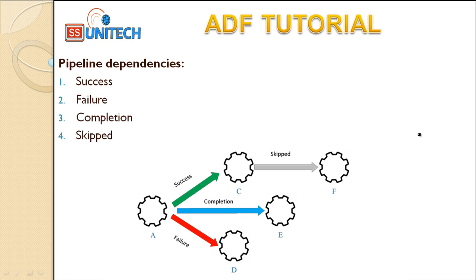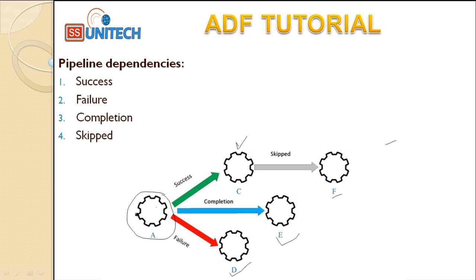As we can see in this diagram, if task A is executed successfully, then we want to execute task C. If task C is not executed, then we want to execute task F. Similarly, once task A is completed, task E will start execution. And if task A is completed with failure, then task D will start executing. So understand that on completion of task A, task E will be executed — either with success or failure, task E will always be executed.